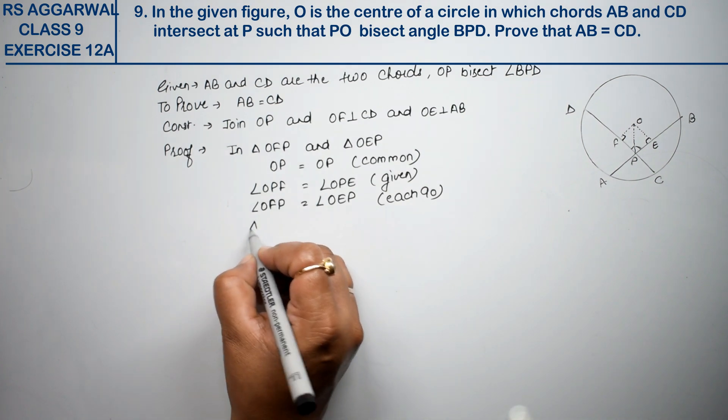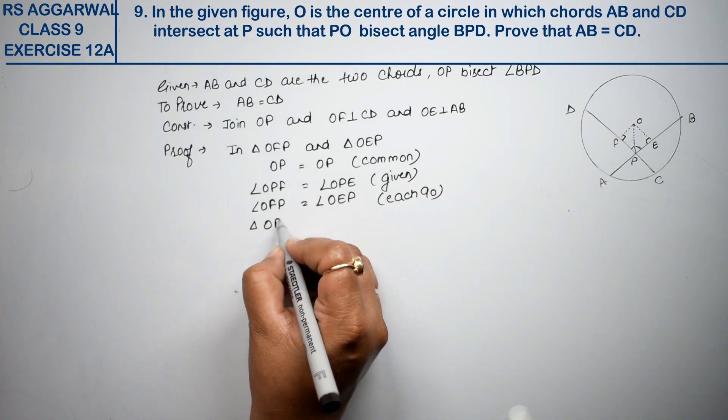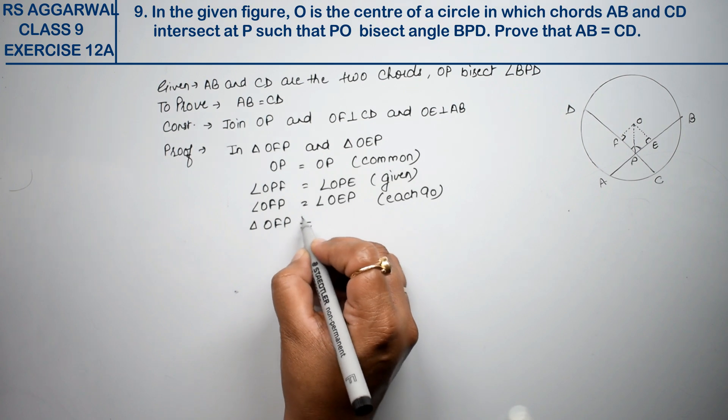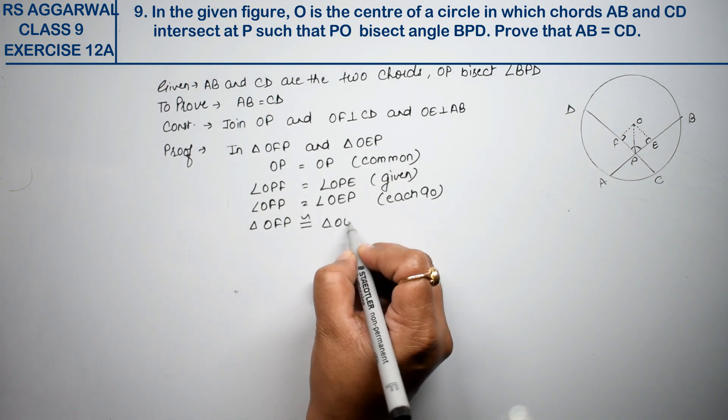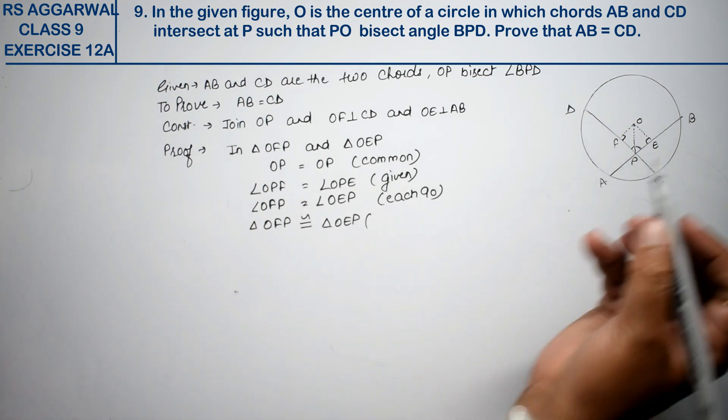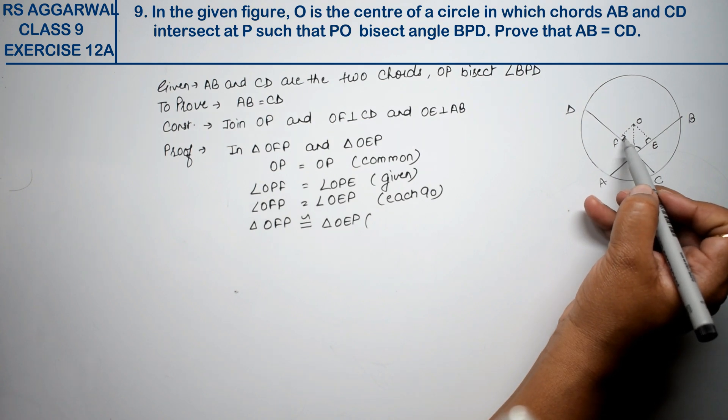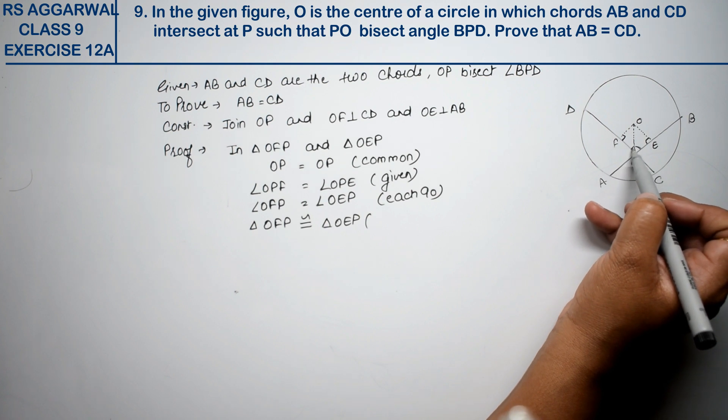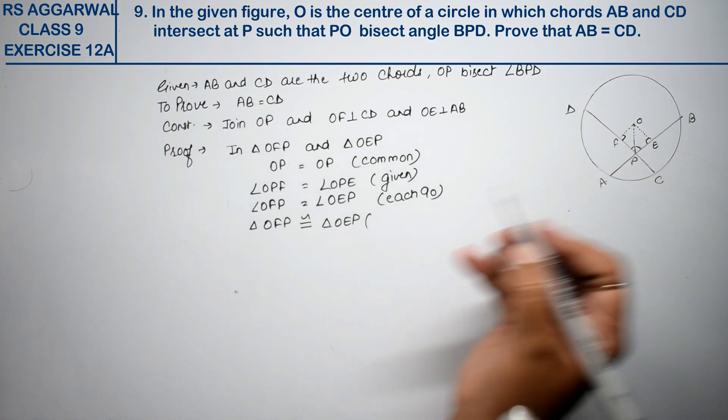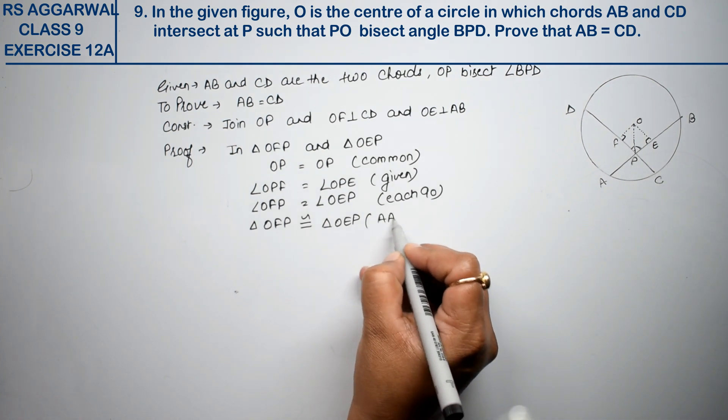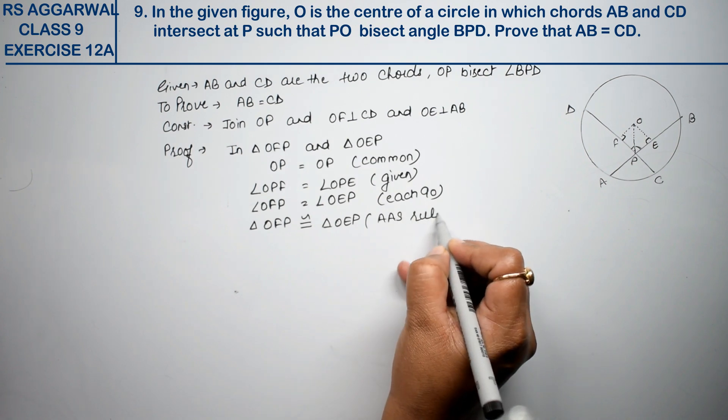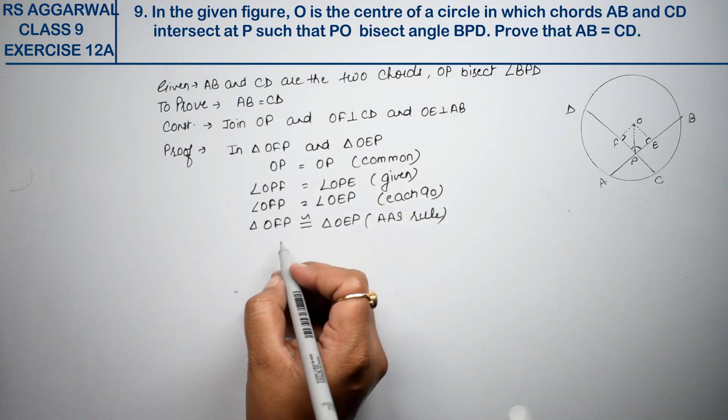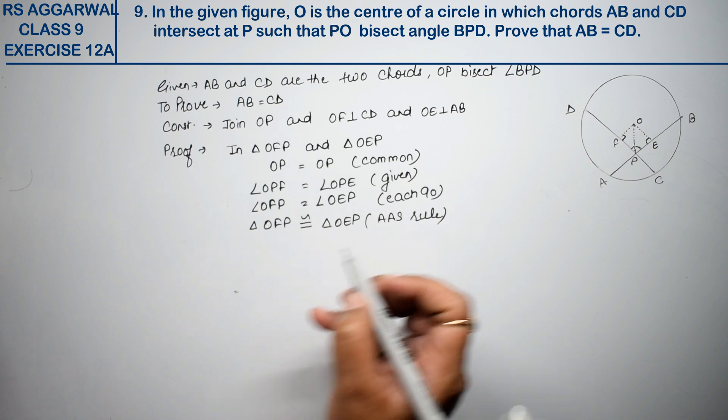So now what happened to our triangles? They became congruent. Triangle OFP is congruent to triangle OEP. Which rule? See, angle came, so by ASA rule they are congruent. Right?